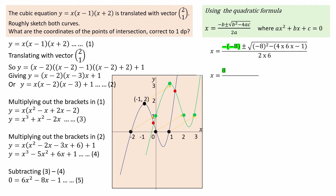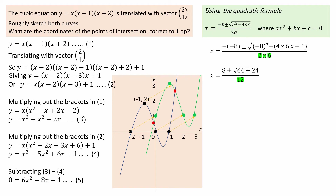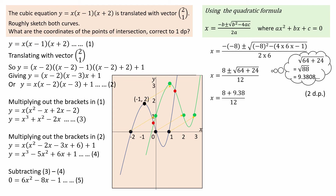Simplifying gives 8 plus and minus the square root of negative 8 all squared, which is 64, minus the bracket 4 times 6 times negative 1, which equals negative 24. Minus negative 24 gives plus 24, all over 12. The square root of 88 is 9.38 to two decimal places. Working to two decimal places to avoid rounding errors, using the positive and negative square roots we obtain two solutions for x.